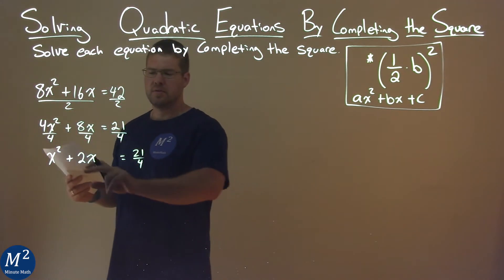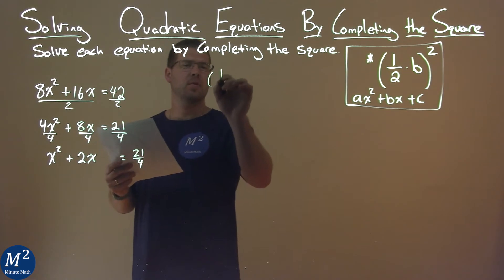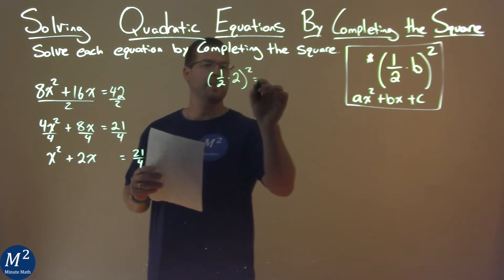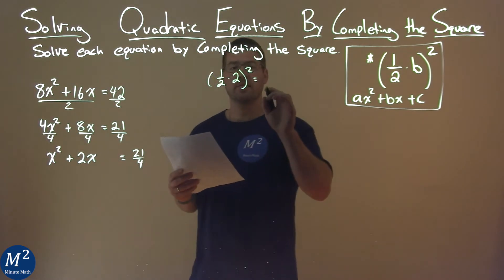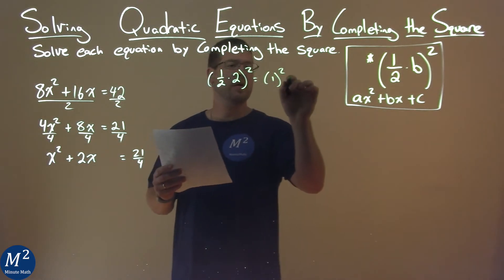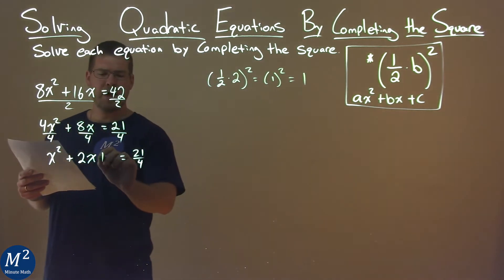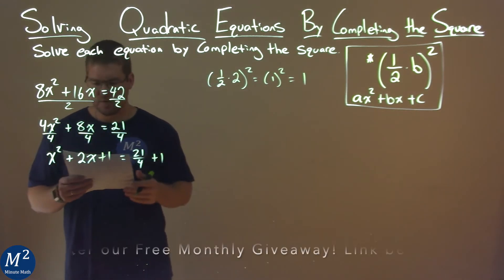I still follow the same process. My b value is 2. So I take one half, multiply it by 2, and then I square that. One half times 2 is 1 squared, and 1 squared is 1. So I'm going to take that 1 and add it to both sides of the equation.